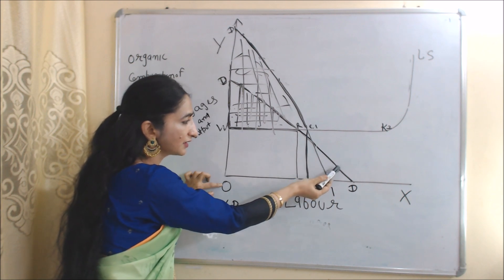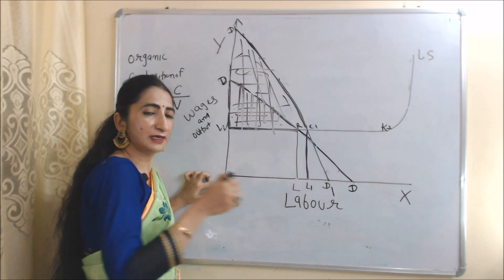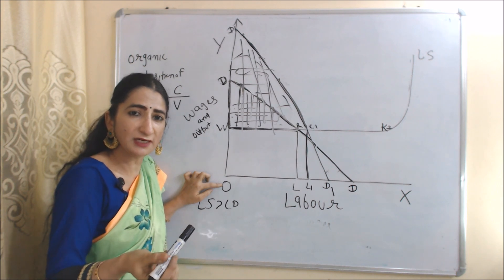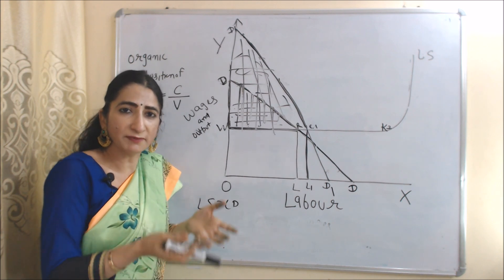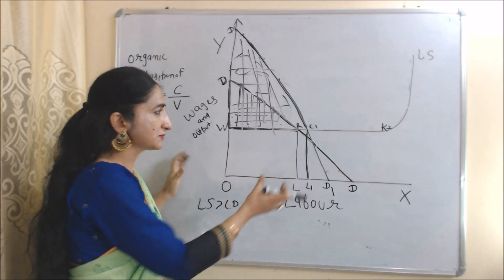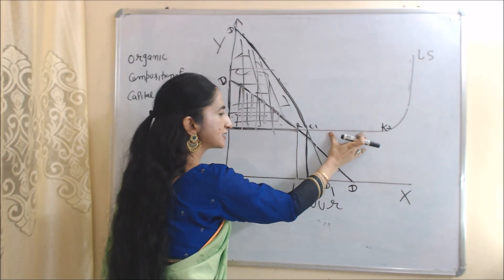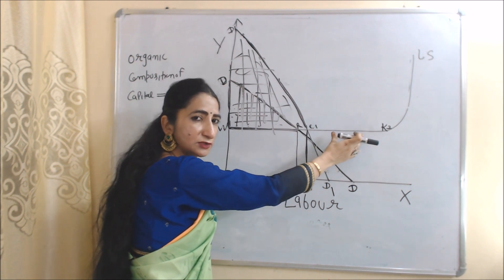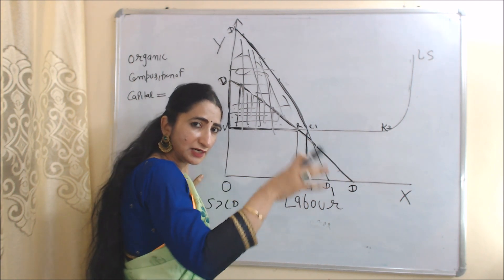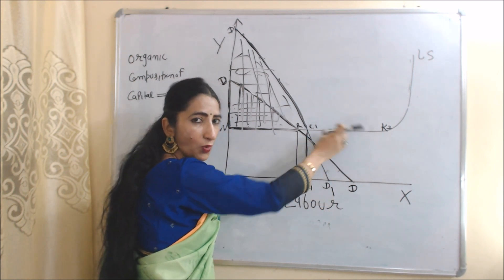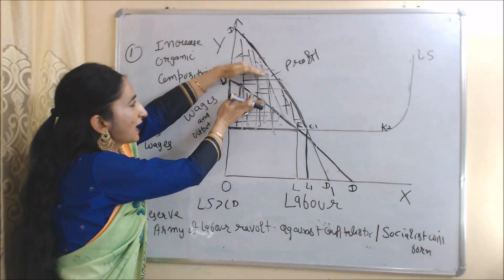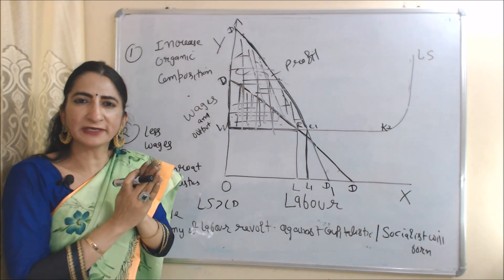If labor demand is less compared to supply — meaning labor supply is more than labor demand — more employees are unemployed. This part (EK2) will be called the reserve army of employees: the group who are unemployed but willing and ready to work. The whole part WD1E1 will be called the profit of the capitalist. But capitalists cannot earn this profit for a long time period — their profit will reduce.